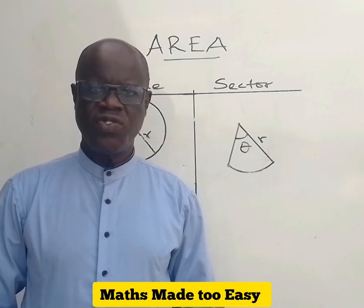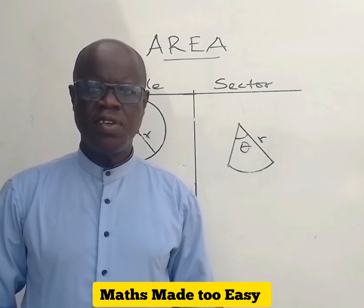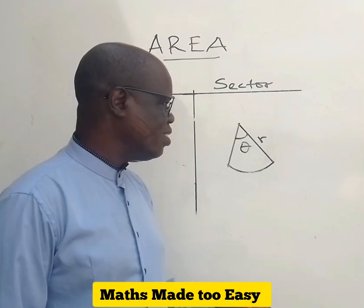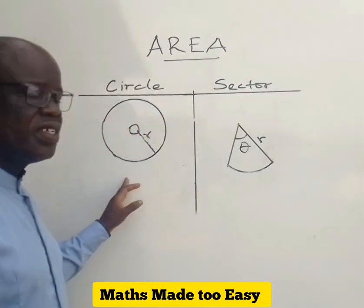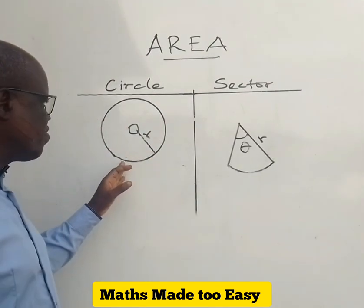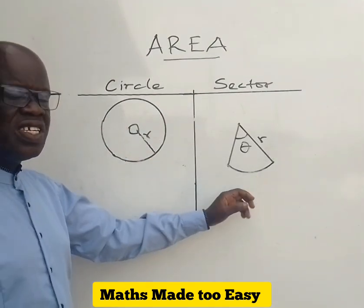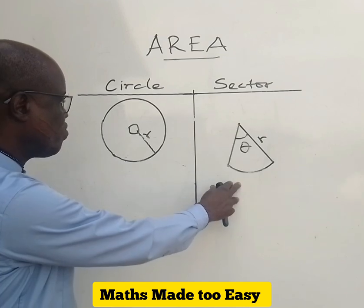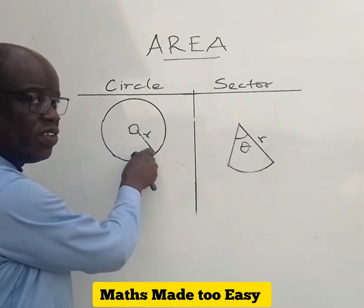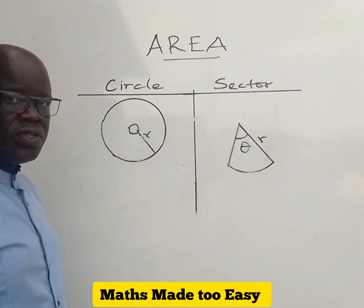I want us to underscore this statement by looking at this example. This is a circle. This is a sector. This sector is part of this circle.